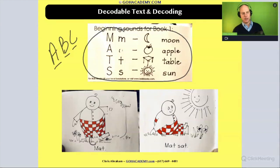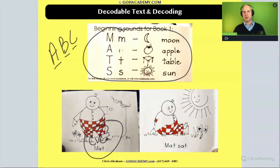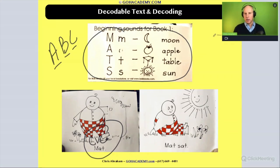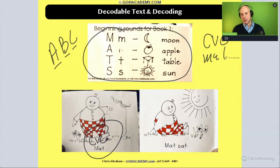They're called CVC words — words that are phonetically regular, very decodable, and very predictable. So words like CVC words, like "mat" or "sat."